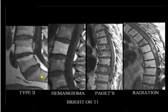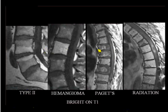Here are things that are going to be bright on T1 images. You've got to run through the type 2 changes. Hemangioma — again, multi-level Paget's is a very typical pattern. Burn that one in to the retina: sort of this patchy high signal, coarsening of trabeculae, but the bodies are expanded. They may lose a little vertical height, but they're still expanded AP.